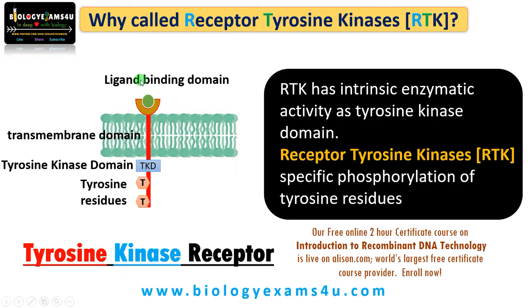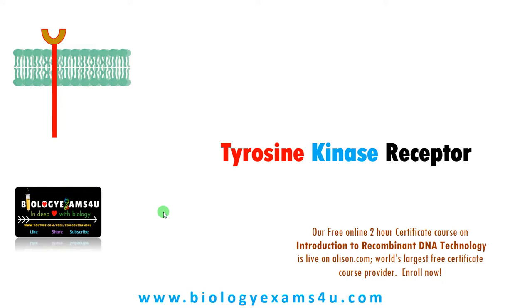This is the monomer of receptor tyrosine kinase. A fully activated receptor is a dimer. Now let us see the RTK pathway.